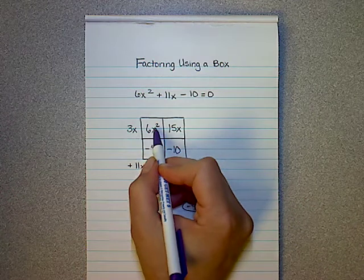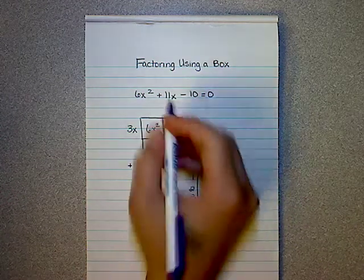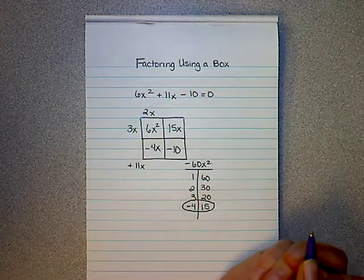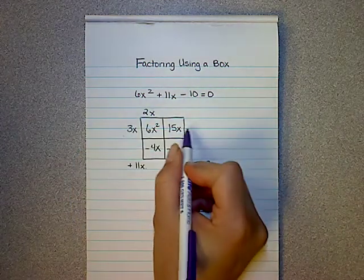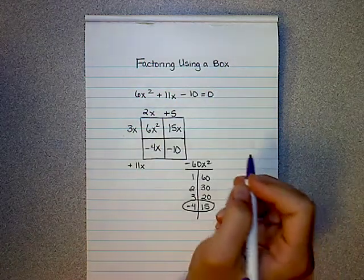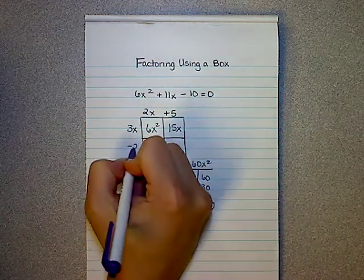Vertically, 6x squared and minus 4x or negative 4x both have an x and a 2 in common. 3x times what is 15x? Positive 5. 2x times what is negative 4x? Negative 2.